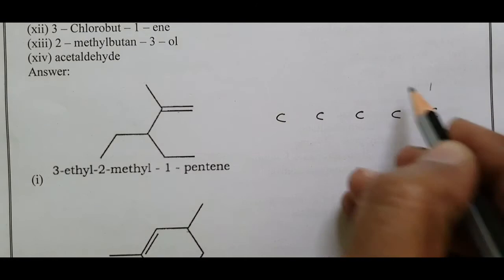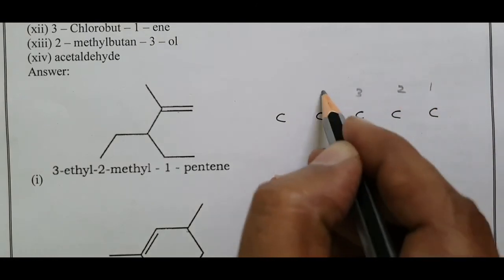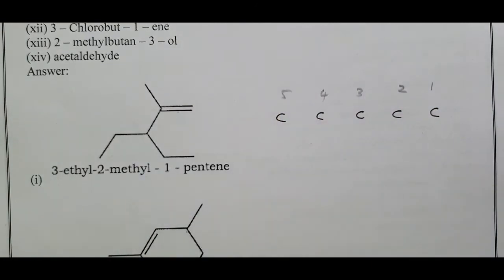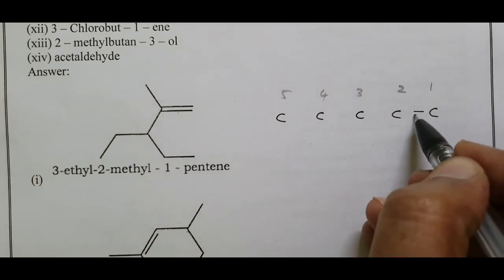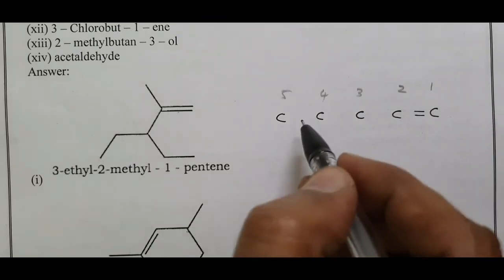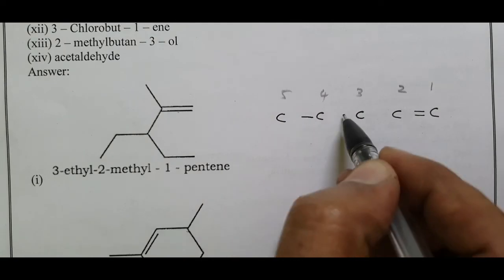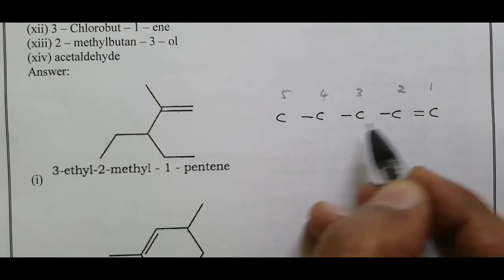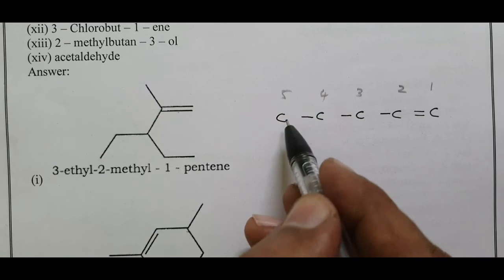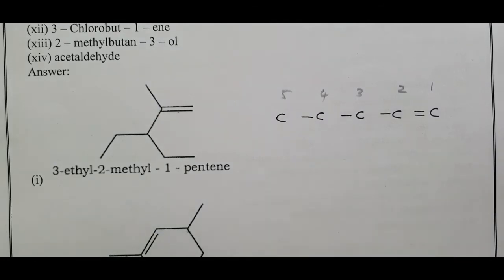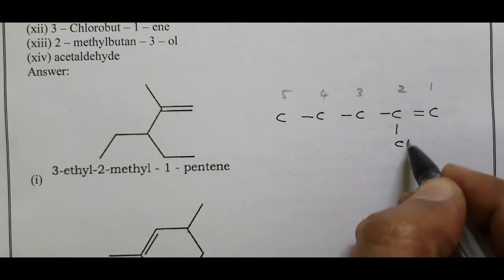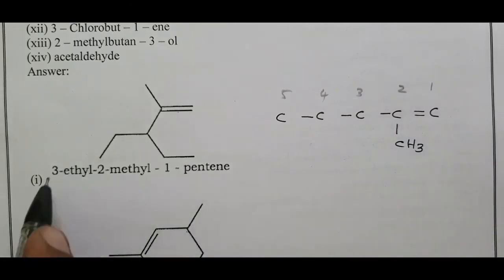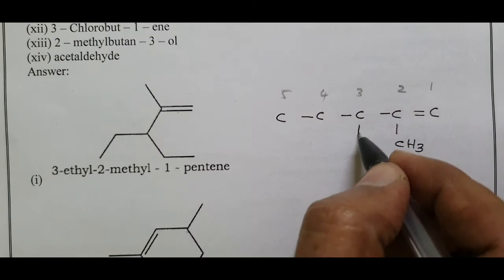Number from left to right or right to left. The first carbon has a double bond. Single bonds fill the remaining positions. The second carbon is at the second position, and the third carbon is at the third position.